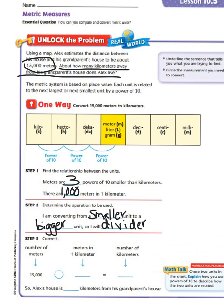Step three says to convert. So the number of meters was 15,000 from our word problem divided by, that's going to go in our circle, 1,000 equals 15. So Alex's house is 15 kilometers from his grandparents house.